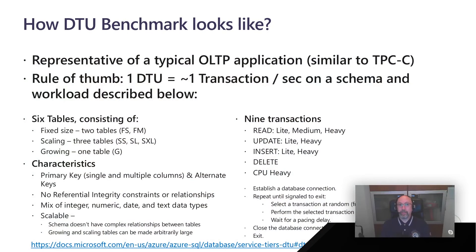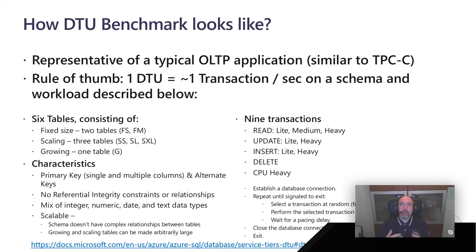As the name Database Throughput Unit implies, we needed a way to represent what this throughput unit really means. So we came out with this synthetic benchmark, which is inspired by industry standard benchmarks like the TPC-C and is very representative of the typical OLTP workload that we have in many applications. As a rule of thumb, you can think about this throughput unit as essentially one transaction per second executed on a schema. We have a number of tables of different sizes.